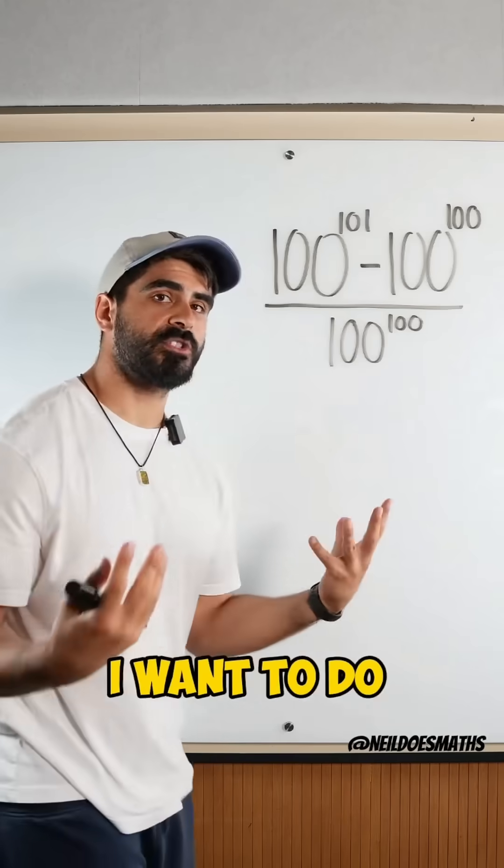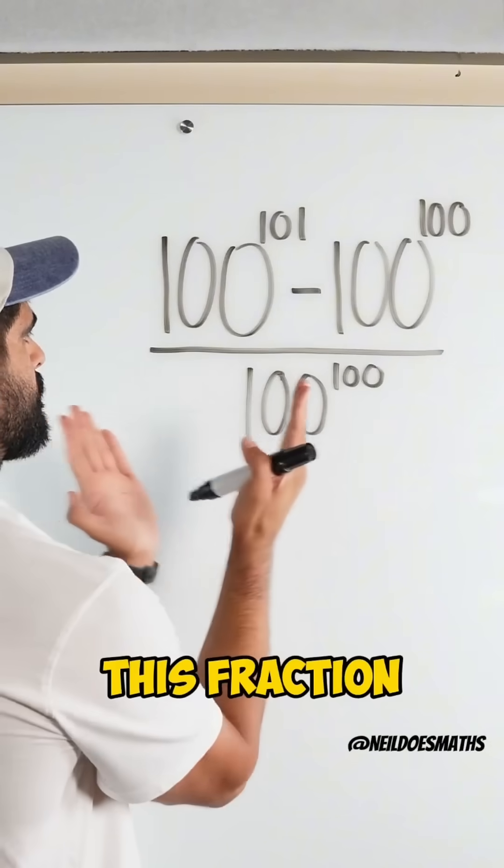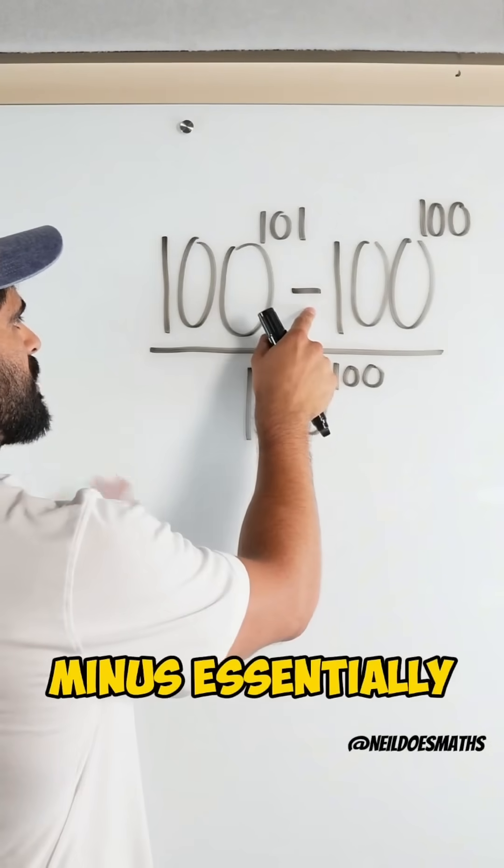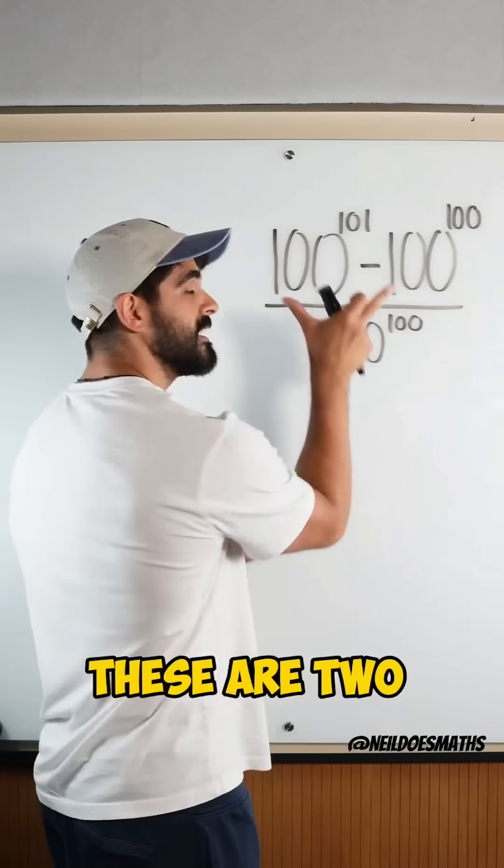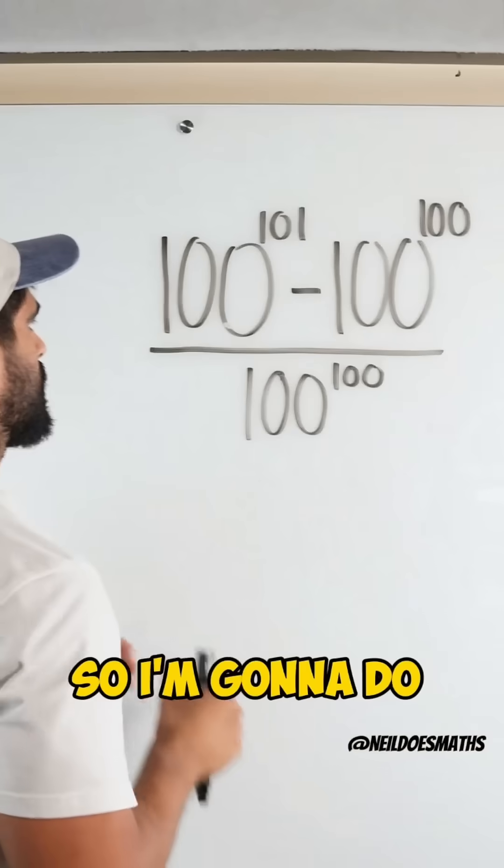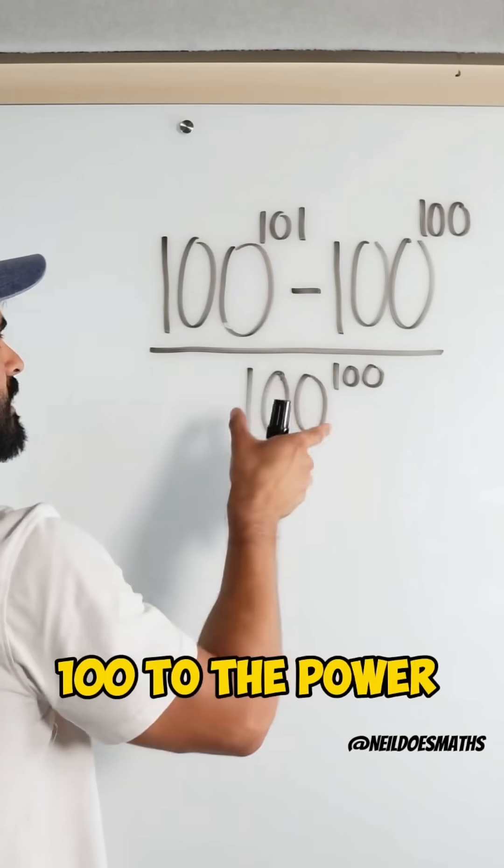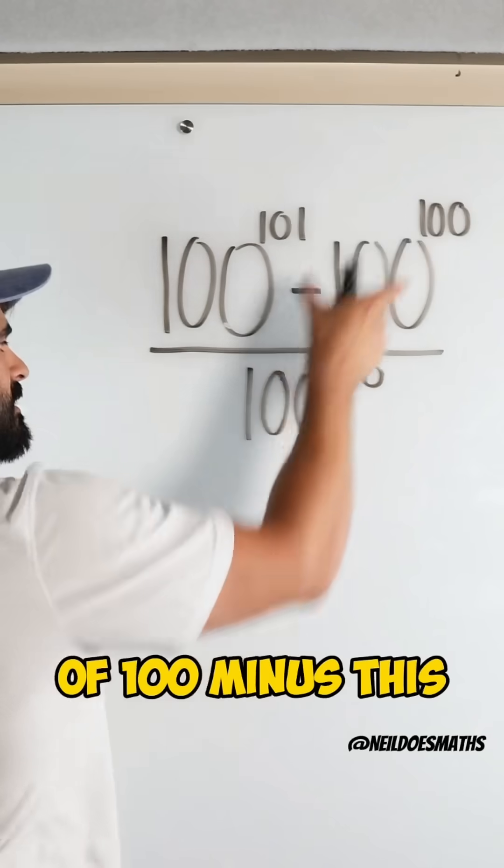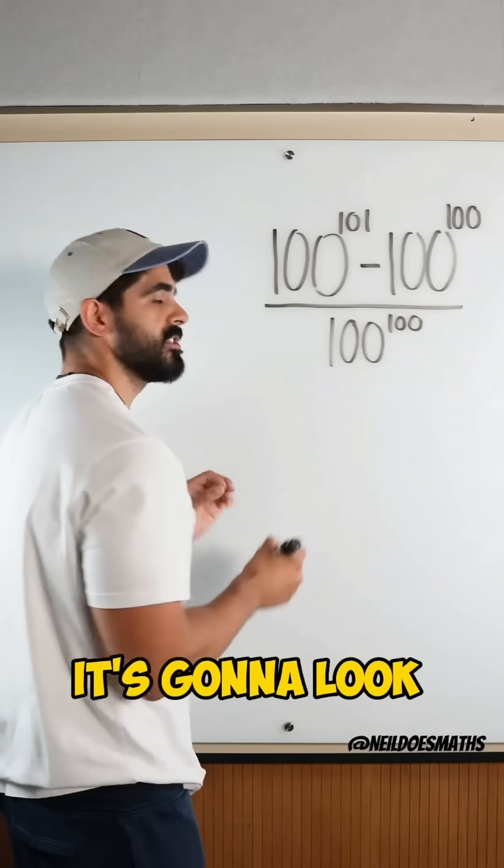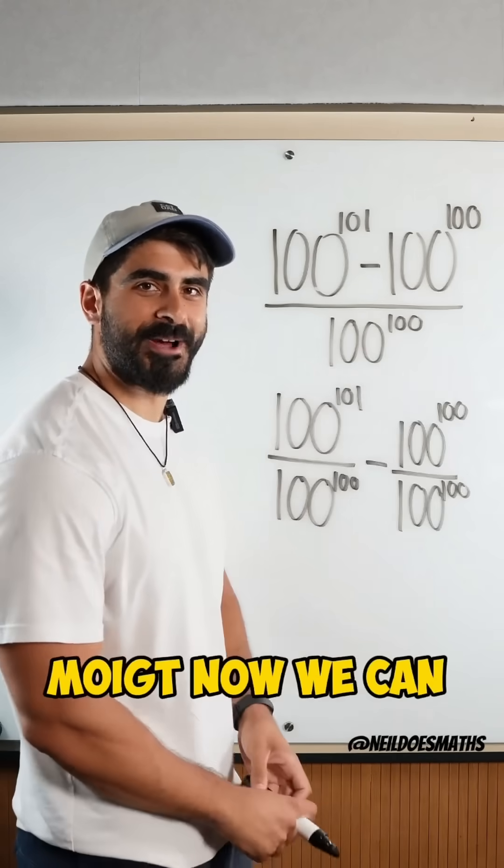So the first thing I want to do is split this fraction because this minus essentially is telling us that these are two separate terms. So I'm going to do this term divided by 100 to the power of 100 minus this divided by 100 to the 100. It's going to look like this. Looks beautiful, mate.